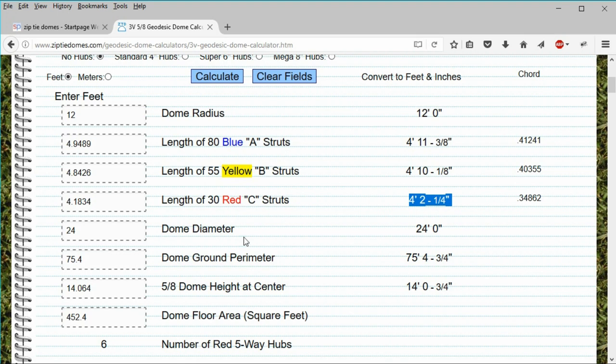The dome diameter of 24 feet is the distance from one side of the dome to the opposite side. It is twice the radius of the dome. The dome ground perimeter is the length of the struts on the ground that are used to make the foundation of the dome.